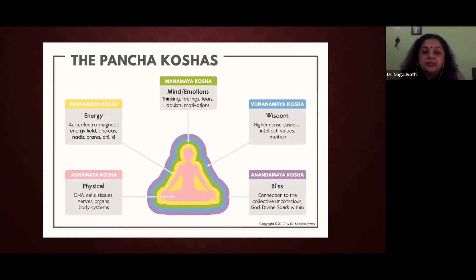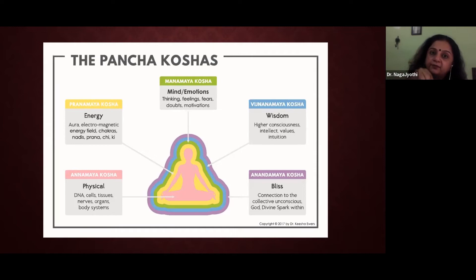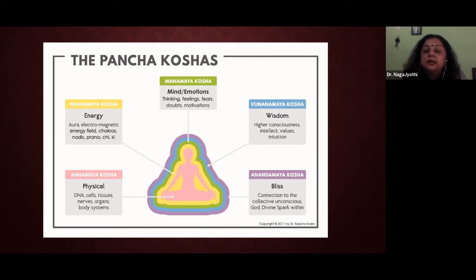Next is the vijnanamaya kosha — wisdom, higher consciousness, intellect, values, and intuition. When we speak about health and well-being, this kosha is very important: for example, you have fever and feel like eating something spicy and fried, but the vijnanamaya kosha tells you it is not good — don't eat it. It tries to give you logical reasoning. But the manomaya kosha, the emotions, can take over and say 'it's okay, I'll take medicine after.' The vijnanamaya kosha is a very important asset in every aspect of our day-to-day lives.